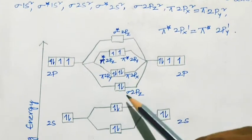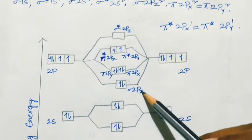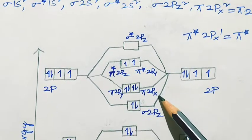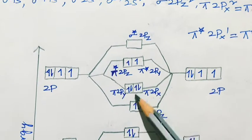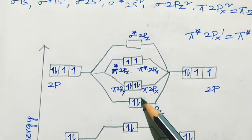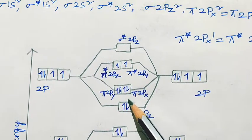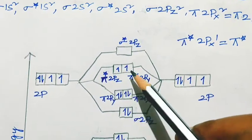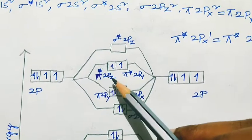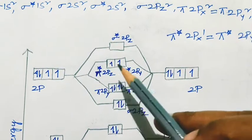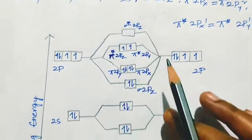In oxygen, sigma 2pz is filled first with 2 electrons. Then pi 2py and pi 2px, which are of the same energy, account for 6 electrons in bonding molecular orbitals. The remaining 2 electrons are filled in the anti-bonding orbitals: pi star 2px and pi star 2py, with one single electron each.